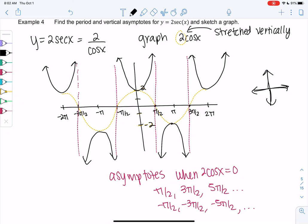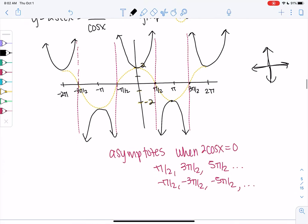The period would be the same as cosine, so the period is the length of a cycle which is 2π.